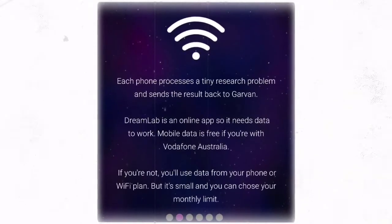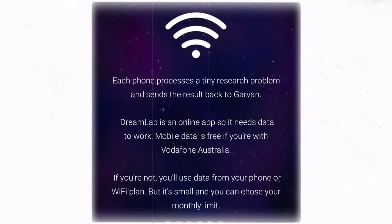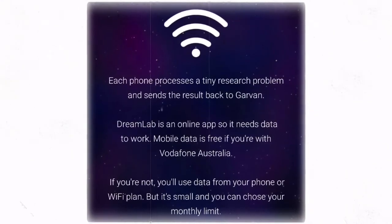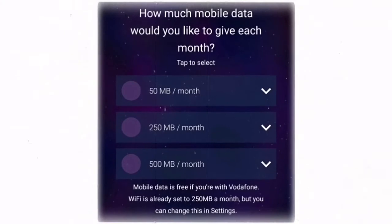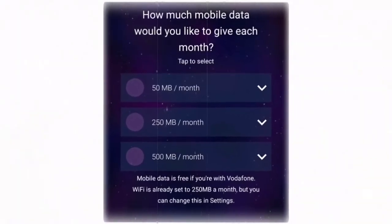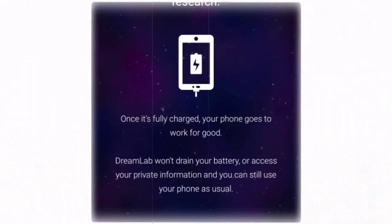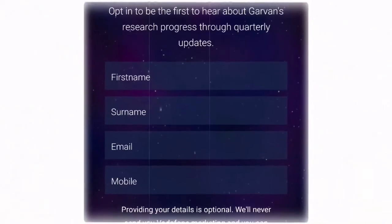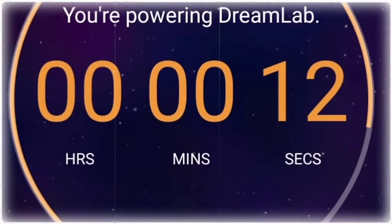Dreamlab is an online app so it needs data to work. Mobile data is free if you are with Vodafone Australia. If you are not, you will use from your phone or Wi-Fi plan, but it's small and you can choose your monthly limit. The app doesn't drain your battery or access your private information, and you can still use your phone as usual. To know more about Garvan's research progress, you can send them your details in the app itself. It also keeps track of your time contribution.